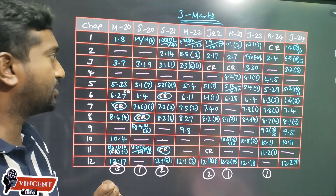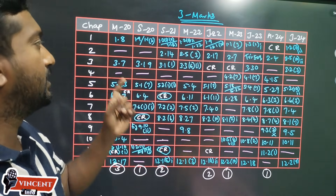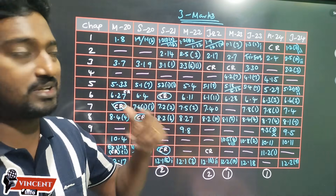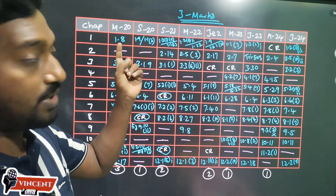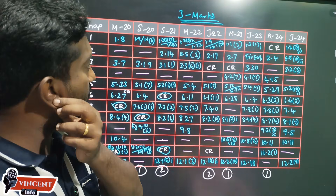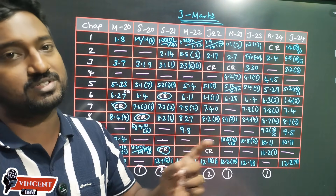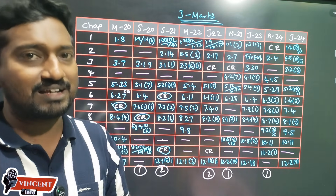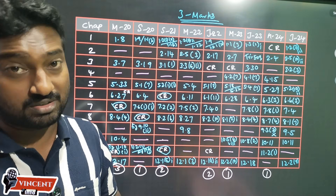In the first chapter, you can expect one question. Example 1.8, Example 1.9 — this is repeated. Exercise 1.1.6, Exercise 1.2. Find the rank — the rank is repeated.